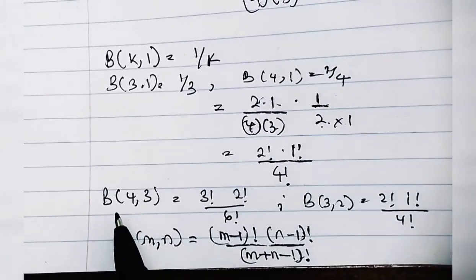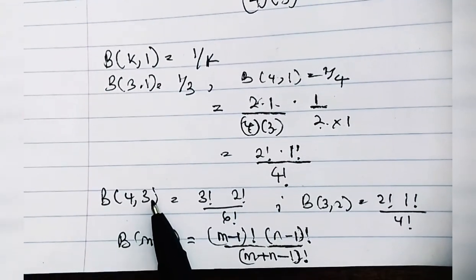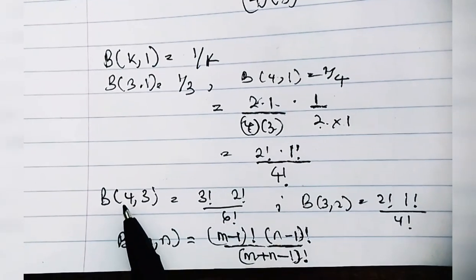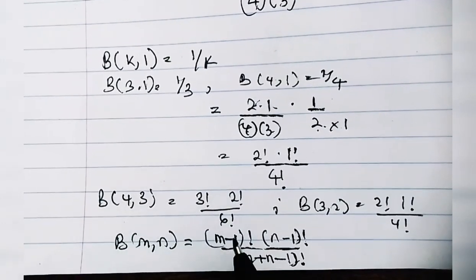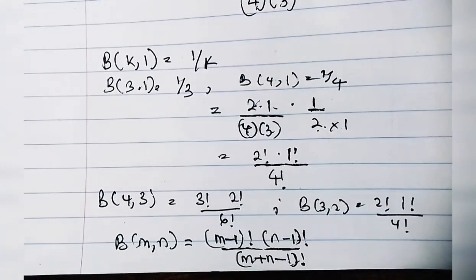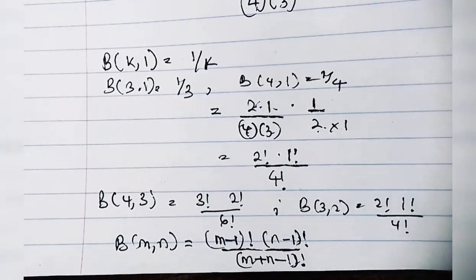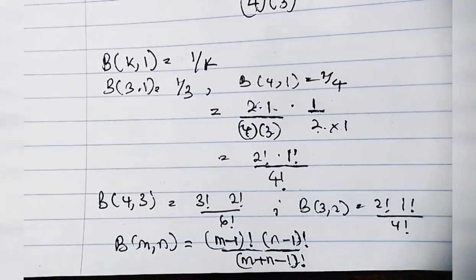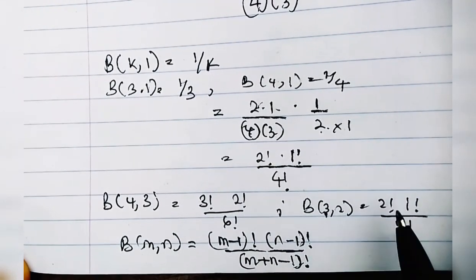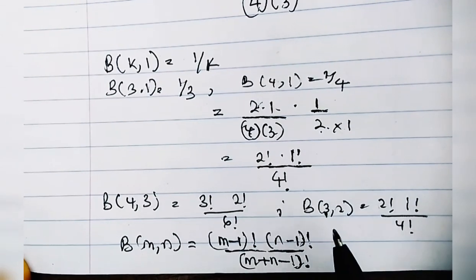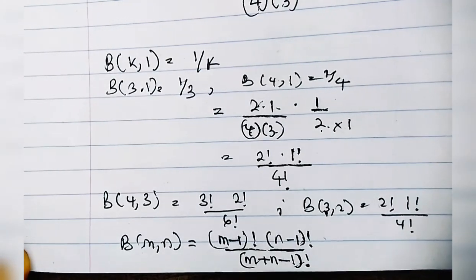For Beta(4,3): 4-1=3 giving 3!, 3-1=2 giving 2!, and 4+3-1=6 giving 6!. For Beta(3,2): 3-1=2 giving 2!, 2-1=1 giving 1!, and 3+2-1=4 giving 4!. So this formula is confirmed. Just like with the Gamma function, we have different solution forms for the Beta function, and this is our third form.